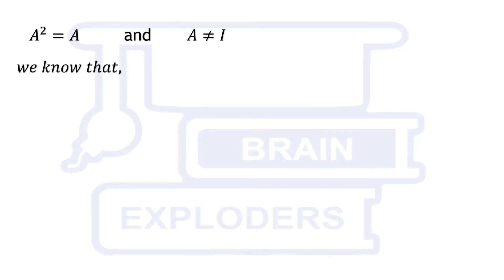We know that if any variable a is equal to its square, then either a is equal to 0 or a is equal to 1.